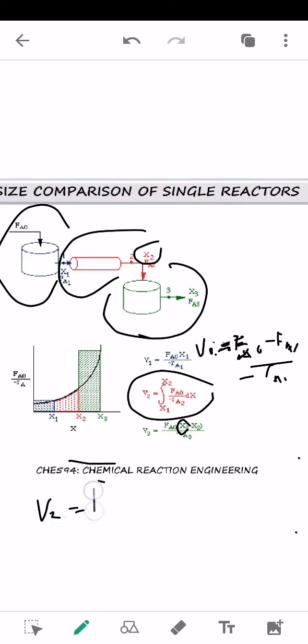Which is V2 sama sama juga dengan FA2 minus FA1 divided by rA3.